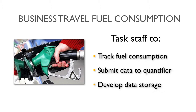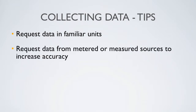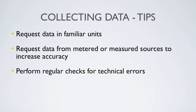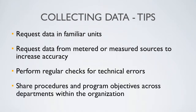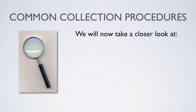Good data collection processes include: requesting data in familiar units; requesting data from metered or measured sources wherever possible, as they may be more accurate than financial records; performing regular checks to discover potential technical errors, like making sure that correct emission factors are applied when using Excel sheets; and sharing procedures and program objectives across departments within the organization to encourage participation and improve the quality of data submission. Now, let's take a closer look at the data collection process by examining common collection procedures for Scope 1, 2, and 3 emissions.